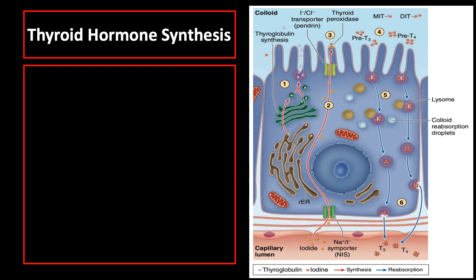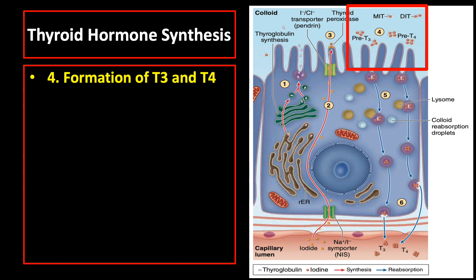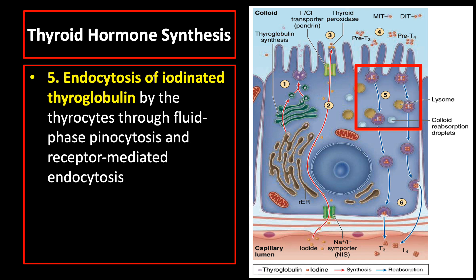The next step is formation of T3 and T4, which occurs when two iodinated tyrosines are covalently conjugated in coupling reactions. This is followed by endocytosis of iodinated thyroglobulin by the thyrocytes, involving both fluid-phase pinocytosis and receptor-mediated endocytosis. The endocytic vesicles fuse with lysosomes and the thyroglobulin is thoroughly degraded by lysosomal proteases, freeing active thyroid hormones as both T3 and T4.